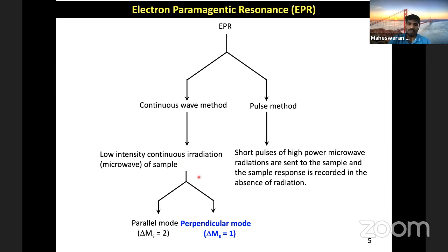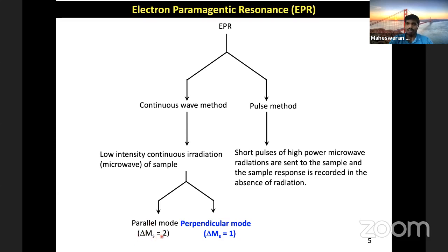Within continuous wave EPR, there are two different recording modes: perpendicular mode and parallel mode. The selection rules for observing allowed transitions are different for each. In perpendicular mode, the allowed transition is delta M equal to plus or minus one. In parallel mode, which is used for anisotropic systems where zero field splitting comes into picture, the selection rule is delta M equal to plus or minus two. The commonly used methodology is perpendicular mode with the continuous wave method, which is what we introduce today.